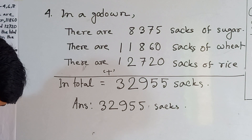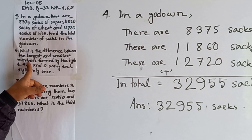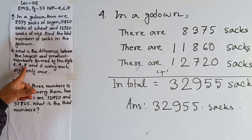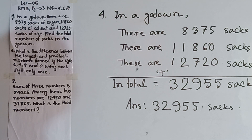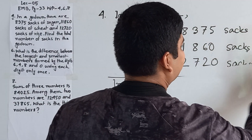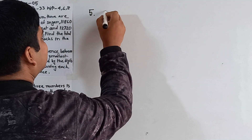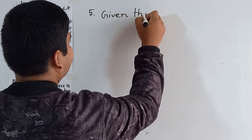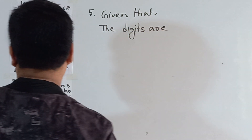This is the solution of question number 4. Now we shall solve question number 6: what is the difference between the largest and the smallest number formed by the digits 6, 4, 8, and 0, using each digit only once? At first we make the largest number, then the smallest number, then we find the difference.